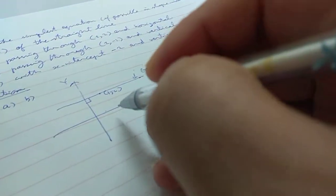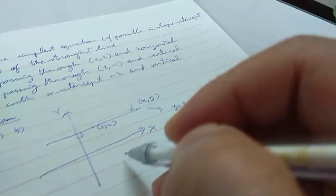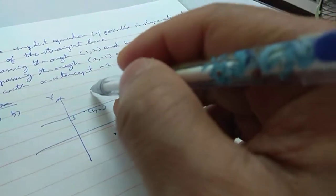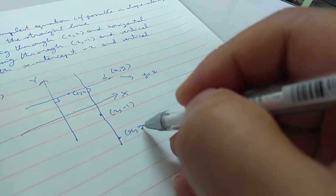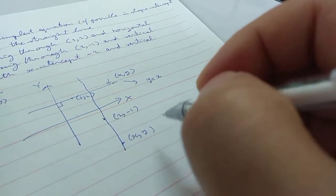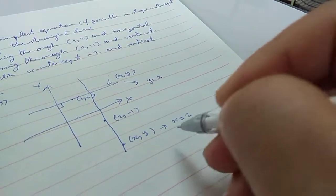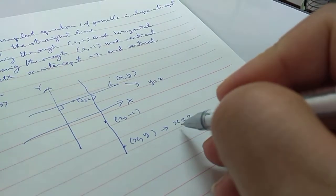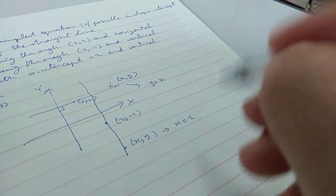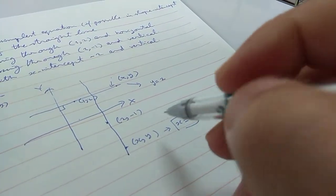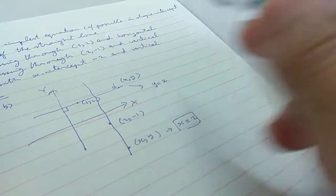For b, you consider (2,-1) and vertical. For any point (x,y) on this line, y can be any number, x must be 2. So all points (x,y) with x equal to 2 will be on this line. So this is the solution to b.